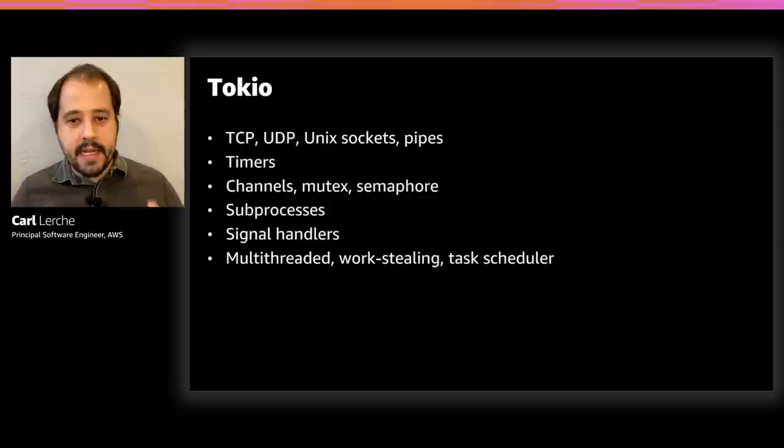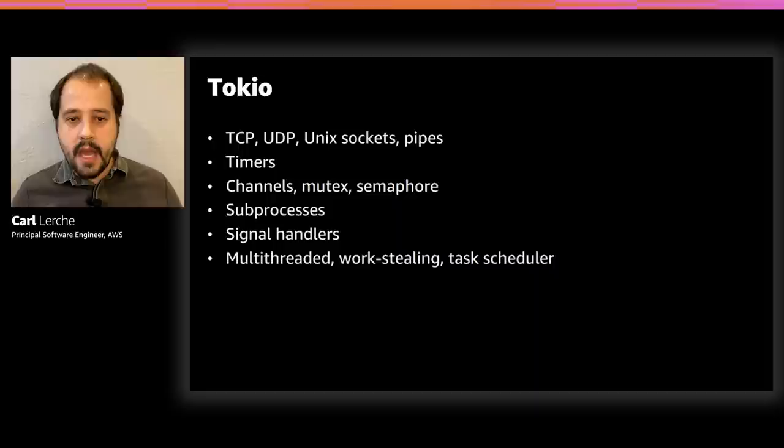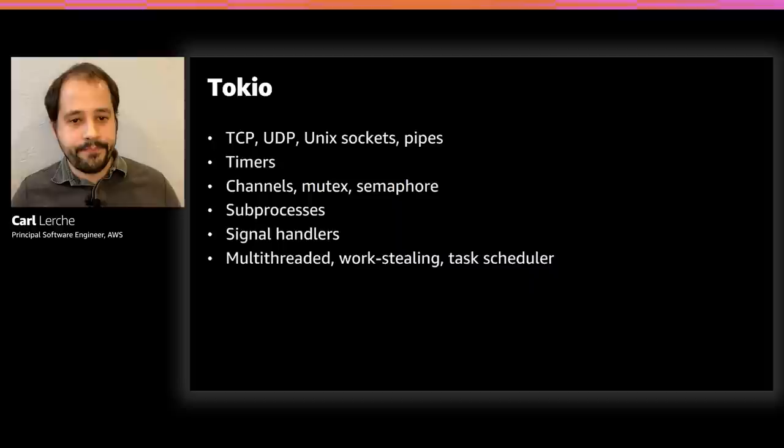Out of the box, Tokyo provides everything needed for writing reliable networking applications, and it has everything you might expect from this library. I'm not going to dig into detail — all of this is covered in the documentation on the website, and the URL will be provided at the end. Instead, I'm going to dig into what makes Tokyo and asynchronous Rust unique.